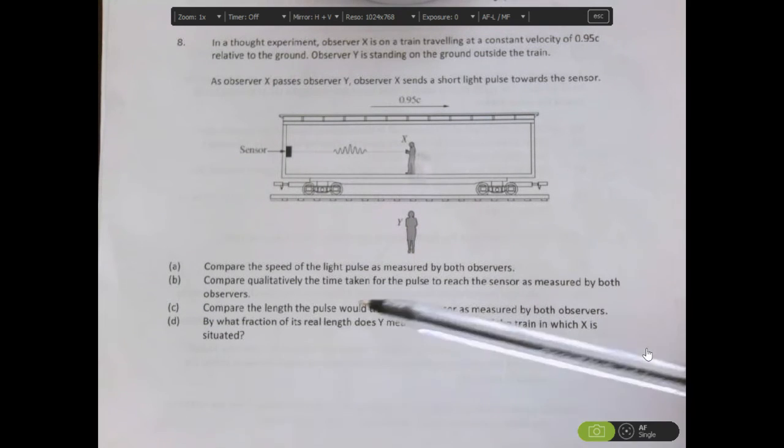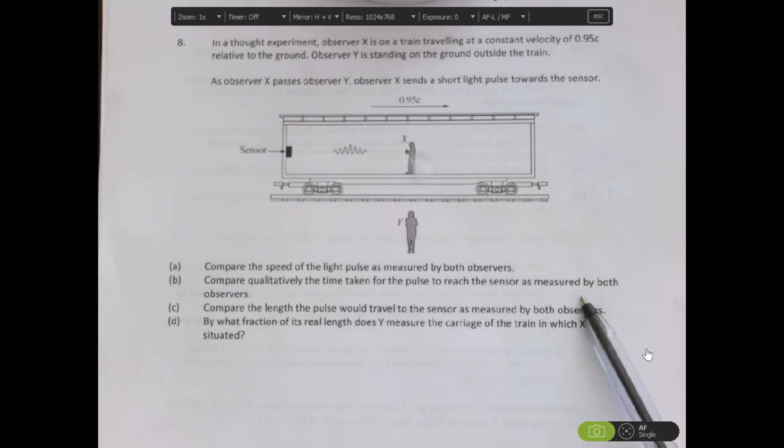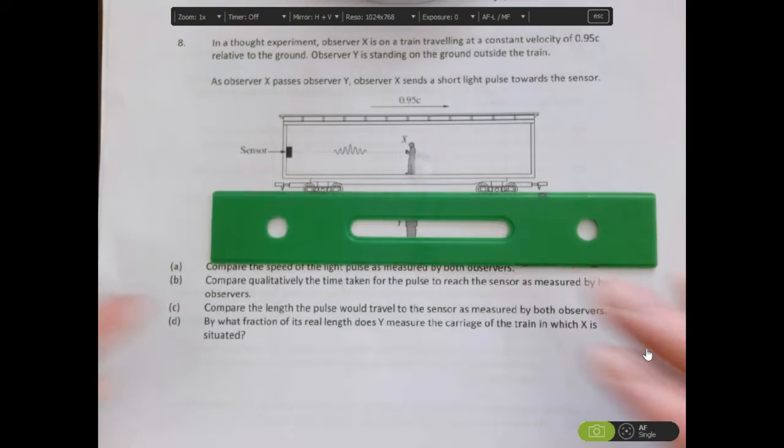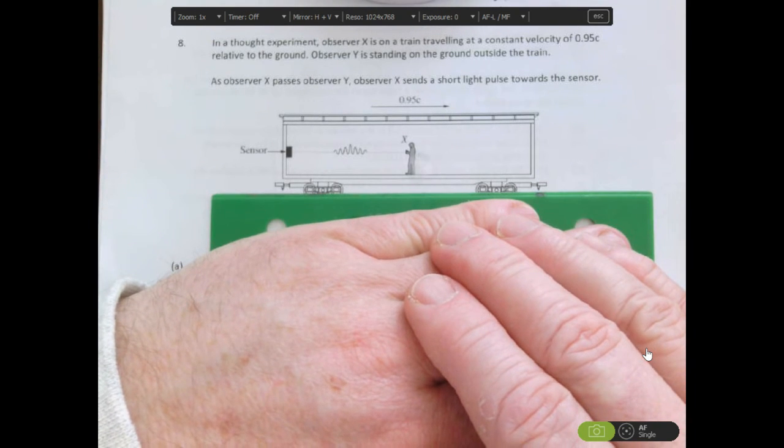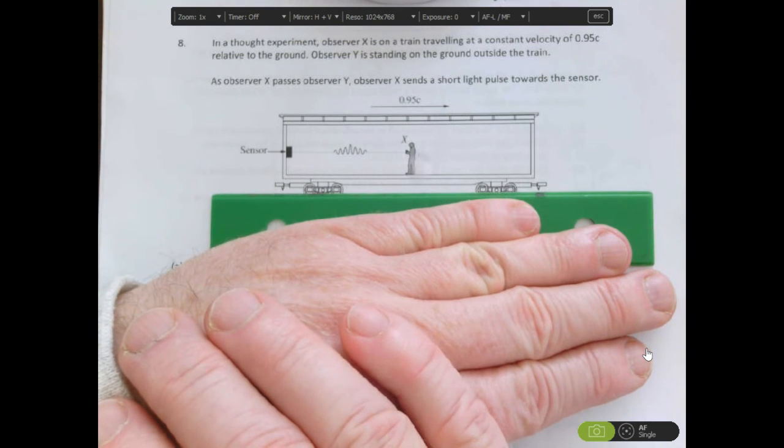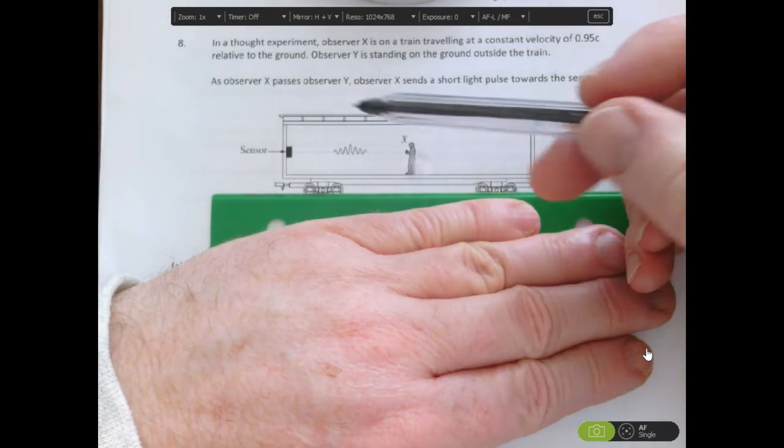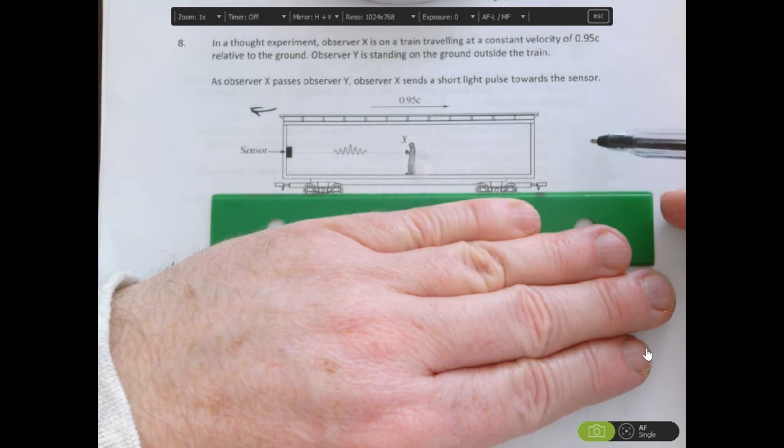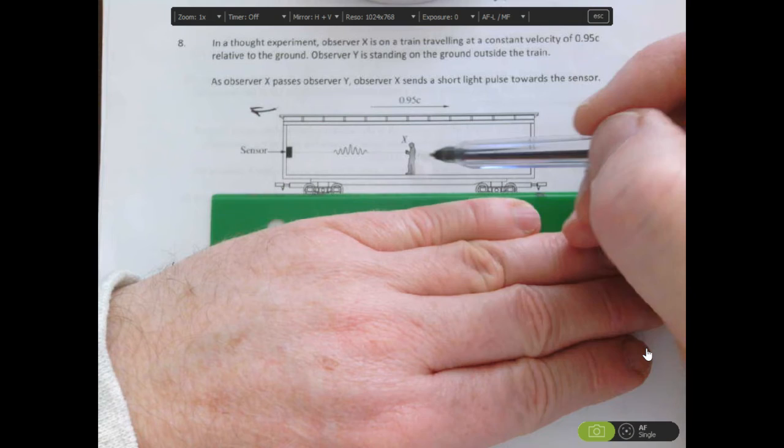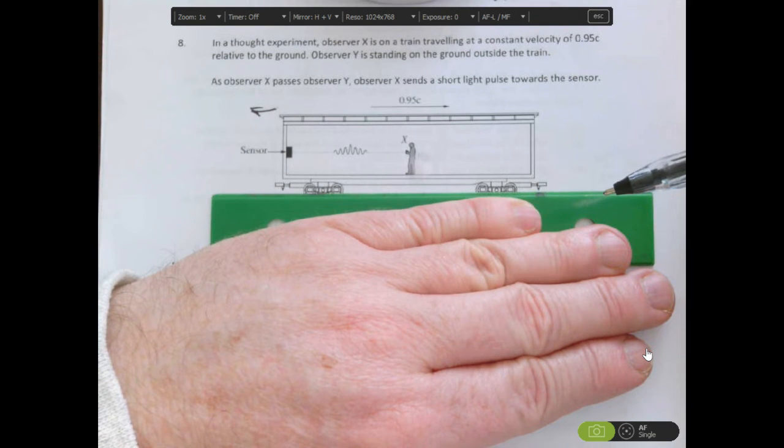Part B: compare qualitatively the time taken for the pulse to reach the sensor as measured by both observers. So let's have a look at X. In X's frame of reference, they think they are stationary. They don't know that the entire universe is going past them at 0.95c. So they think they're stationary and the world is going back in the opposite direction. So in their frame of reference, they think they're stationary. Therefore, this will just take what they say is a normal time for it to happen.